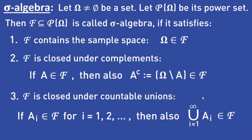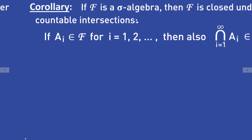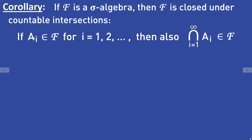Before showing some examples of sigma algebras, we will prove the following corollary. If F is a sigma algebra, then F is closed under countable intersections. That means if the sets Aᵢ are in F, for i equal to 1, 2, and so on, then the countable intersection of these sets is also in F.